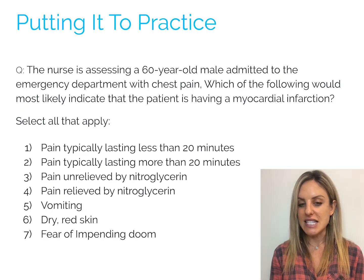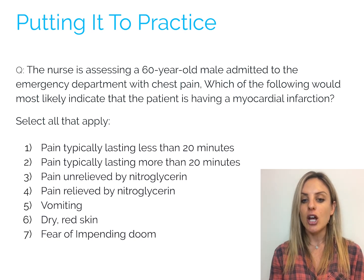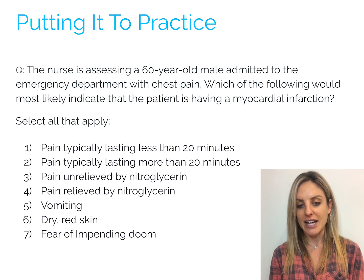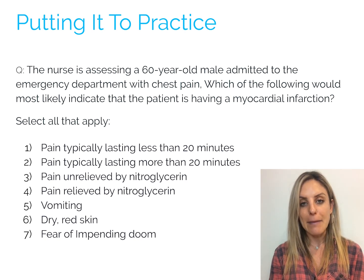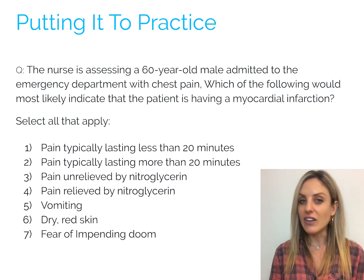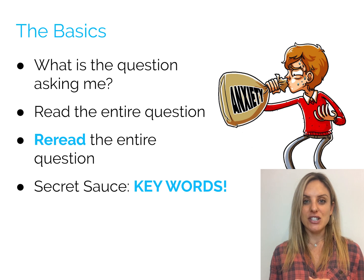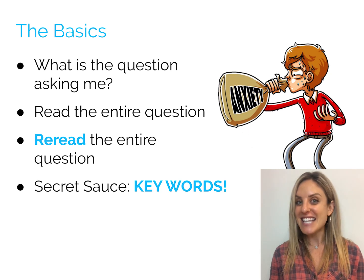The nurse is assessing a 60-year-old male admitted to the emergency department with chest pain. Which of the following would most likely indicate that the patient is having a myocardial infarction? Select all that apply. Select all that apply — a lot of us panic immediately. Before you can even look at the answer options, you're already having a meltdown. All you have to do right now is really breathe and focus and ask yourself what the question is asking you.